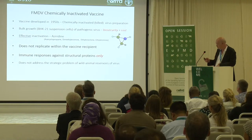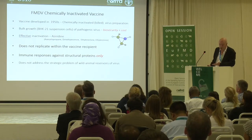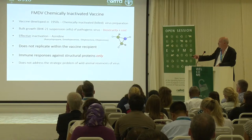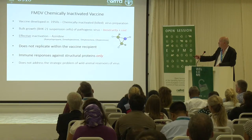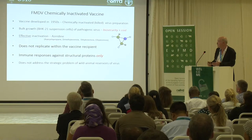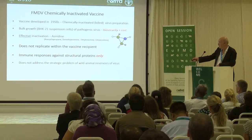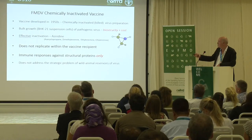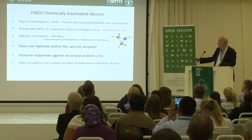Accompanying that in the 1950s, chemical agents were much more effective at inactivating the virus than formaldehyde was for polio. So we've got a pretty effective chemically inactivated killed virus preparation. But the problem with this method of making vaccines is that you've got to have bulk growth — tens of thousands of litres of pathogenic virus — requiring high biosecurity facilities, adding to the cost. These viruses do not replicate within the vaccine recipient, so you basically get immune responses against only the structural proteins. And crucially, this chemically inactivated vaccine strategy does not address the strategic problem of wild animal reservoirs of virus.